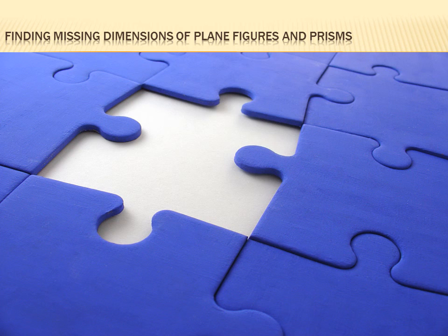Today, we're going to be talking about finding missing dimensions of plane figures and prisms. A plane figure is like a circle or a rectangle, a two-dimensional figure. A prism is a three-dimensional figure, like a box. We're going to be trying to find the missing piece. It's kind of like a puzzle or a game.